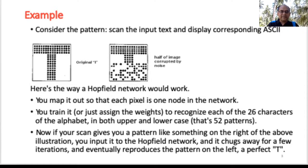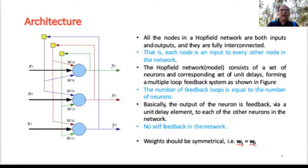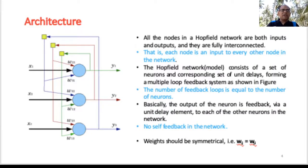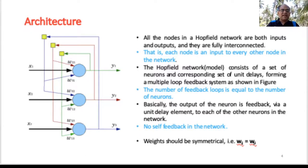Looking at the architecture: since it is a single layer, both inputs and outputs are present and fully interconnected. Each node in the input is connected to every other node in the network. The Hopfield network consists of a set of neurons and a corresponding set of unit delays, forming a multiple-loop feedback system, as depicted in the picture.